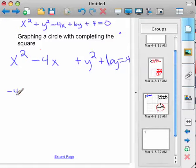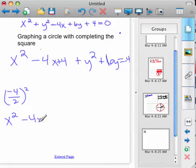So, negative 4 divided by 2 squared would be 4. Negative 4 divided by 2 is negative 2 squared is 4. So, we're going to add 4 here. And you also go ahead and add it on the other side.